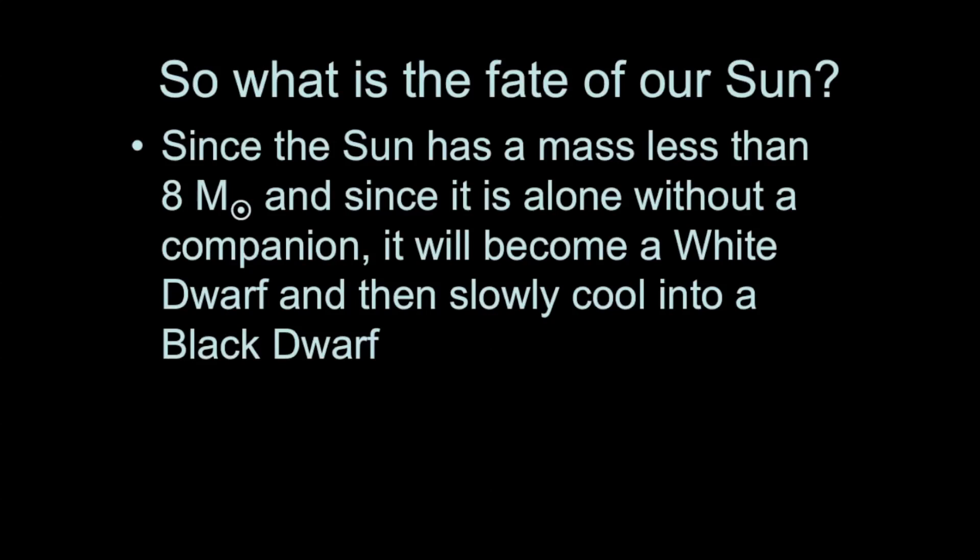What happens to our sun? Our sun doesn't have a companion star. Because it's a low mass star with only one solar mass — well under the eight solar mass threshold — it will become a white dwarf at the end of its red giant lifetime, and then steadily cool to become a black dwarf. That is the fate of our sun, approximately five billion years from today.